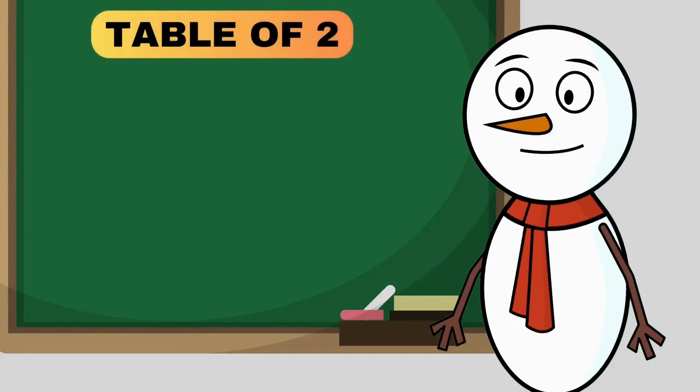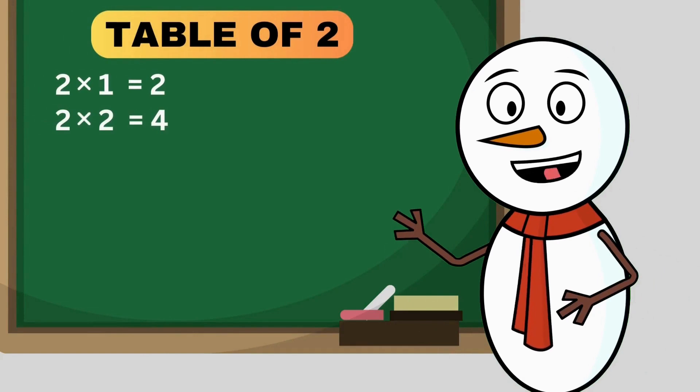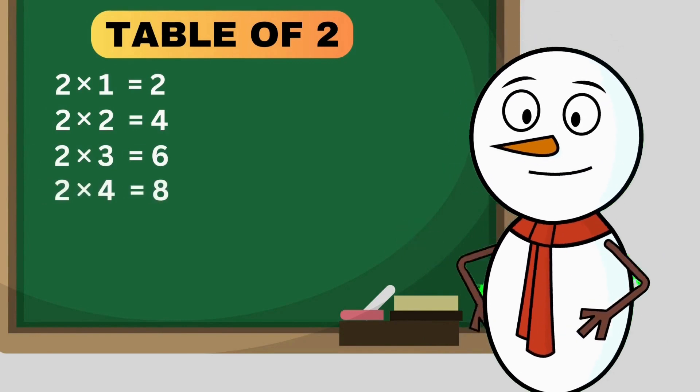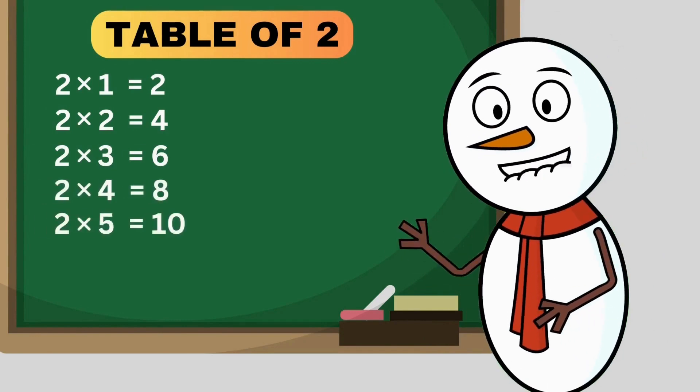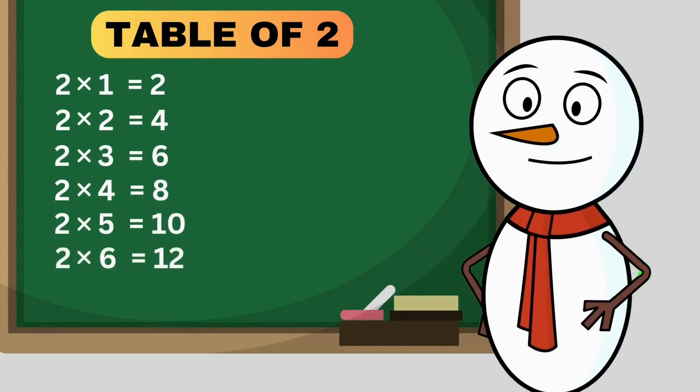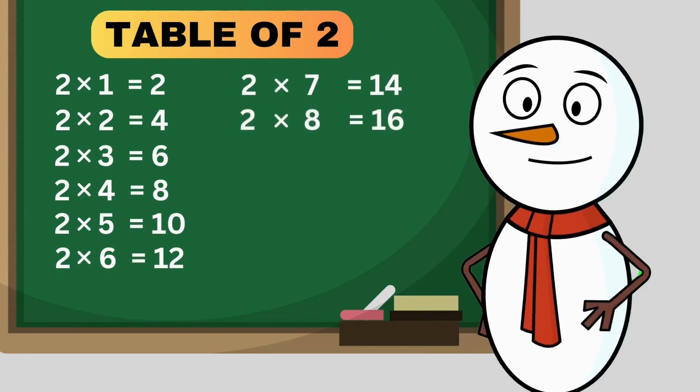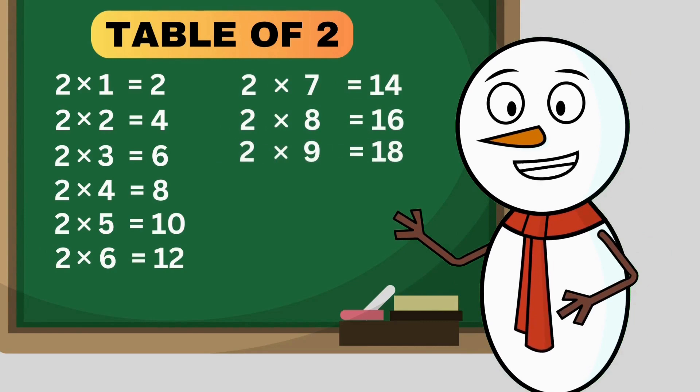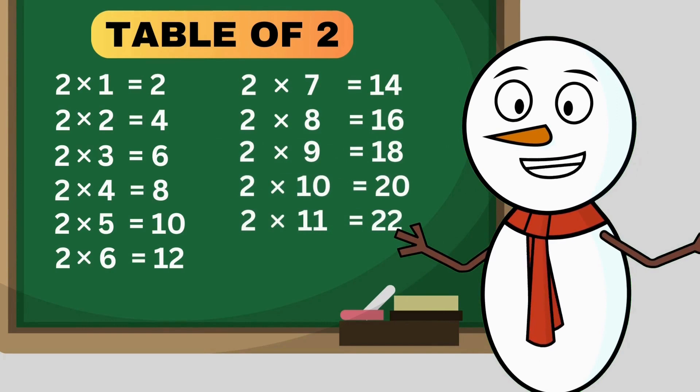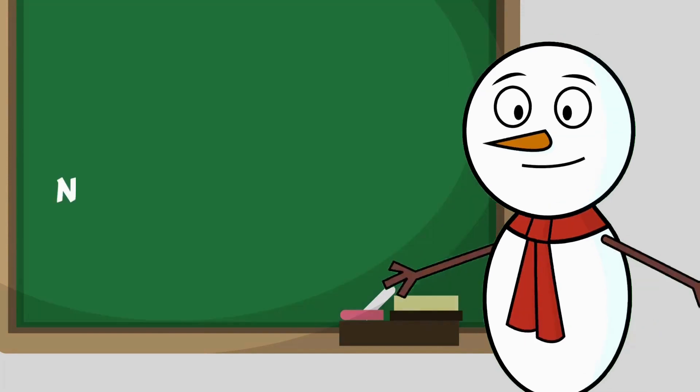Table of 2: 2 times 1 is 2, 2 times 2 is 4, 2 times 3 is 6, 2 times 4 is 8, 2 times 5 is 10, 2 times 6 is 12, 2 times 7 is 14, 2 times 8 is 16, 2 times 9 is 18, 2 times 10 is 20, 2 times 11 is 22, 2 times 12 is 24. Okay.